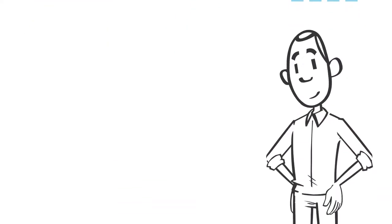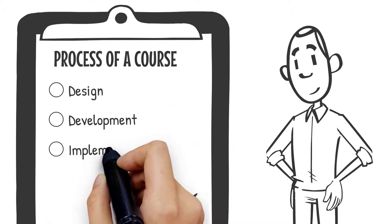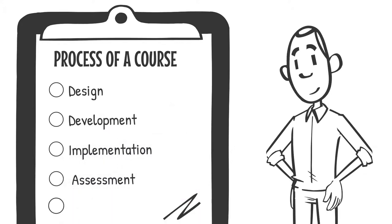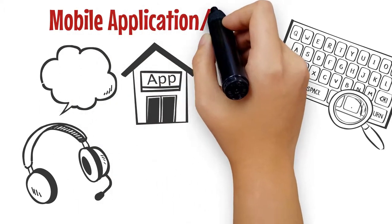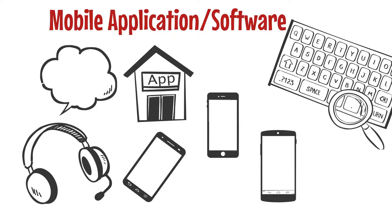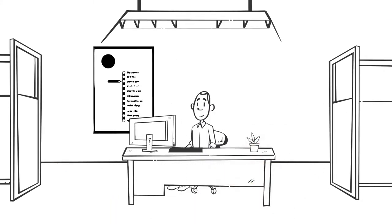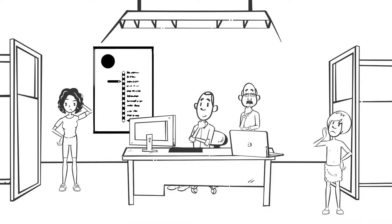Nine categories have been determined for use in the design, development, implementation, assessment, and analysis process of a course. It is better to introduce free mobile applications and software to follow those steps for each category effectively, for use by adult education providers and teachers. Most participants think that they don't use digital tools enough and would like to use them regularly after training.